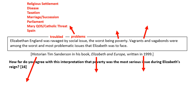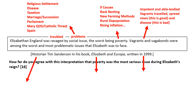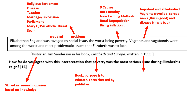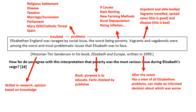In terms of problems, these are some of the other issues Elizabeth was facing at the time. There were nine causes of poverty; four are listed and the other five can be found in your notes. Regarding vagrants and vagabonds, we know about impotent versus able-bodied poor. A vagrant would travel around and spread news — a good thing — but would also spread disease, which is a bad thing. We also know that Tim Sanderson is a historian skilled in research; it's written in a book which would have its facts checked; and the fact it was written in 1999 is a benefit because the author would have had time to research and a more holistic view of all the problems caused in the Elizabethan era, enabling him to make a better decision about his interpretation.